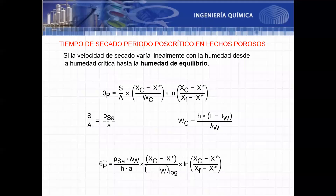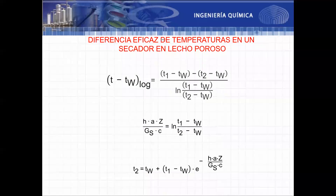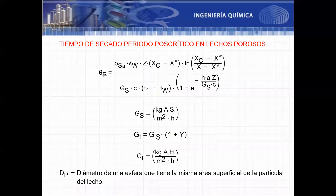Para el periodo poscrítico también se aplica la misma diferencia de temperaturas como media logarítmica. Al reemplazar esa diferencia de temperaturas en la ecuación del periodo poscrítico, se obtiene la relación que da el tiempo de secado para el periodo poscrítico en lechos porosos, en función del coeficiente de convección y la superficie específica. El coeficiente de transferencia de calor por convección es función del número de Reynolds para convección forzada. En unitarias 1 también se vio que la superficie específica del lecho se puede hallar a partir del diámetro de partícula.